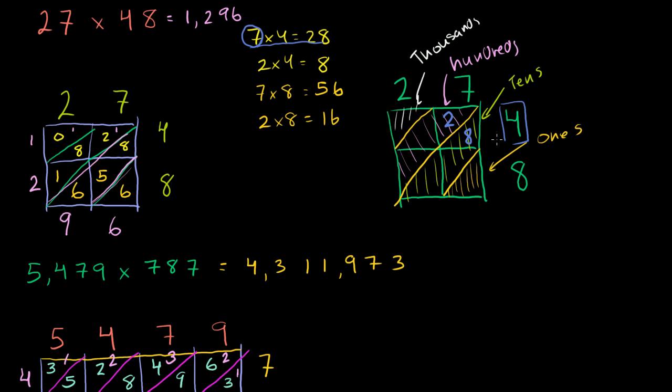But this 4, it's the 4 in 48. So it's not just a regular 4, it's really a 40. Right? 48 can be rewritten as 40 plus 8. This 4 right here actually represents a 40. So right here we're not really multiplying 7 times 4, we're actually multiplying 7 times 40. And 7 times 40 isn't just 28, it's 280. And 280, how can we think about that? We could say that's 2 hundreds plus 8 tens.